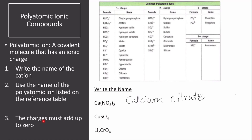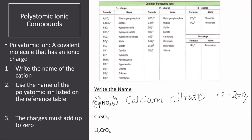The last thing to do is to make sure that the charge adds up to zero. There is one calcium for every two nitrate ions. Calcium has a positive 2 charge, and from the table we know that nitrate has a negative 1 charge. So multiplying 1 times positive 2 gives plus 2, and 2 times negative 1 gives negative 2. These sum to zero, so this is a neutral compound.